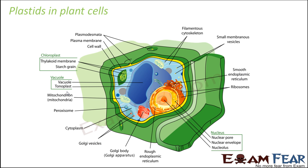Let us see where plastids are located in plant cells. So these are the plastids — here it is displaying a chloroplast. Now we will talk about the different types of plastids — chloroplast, chromoplast, and leucoplast — where they are found and what each of them does.